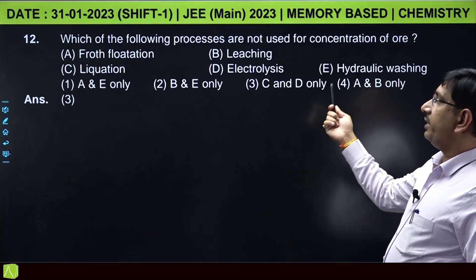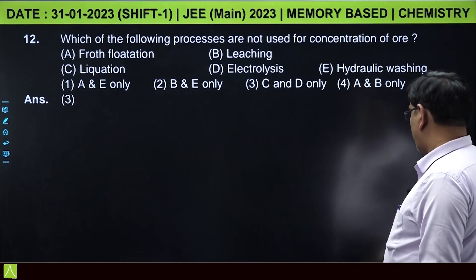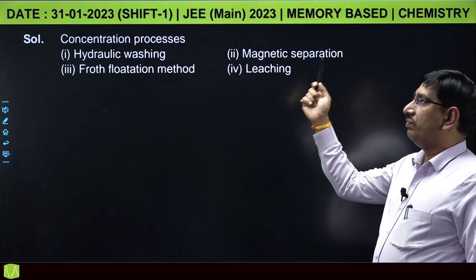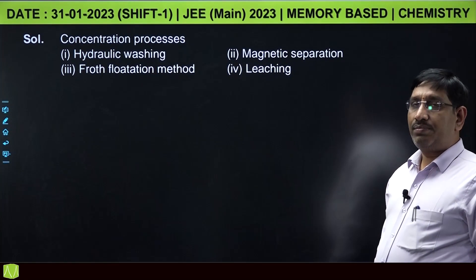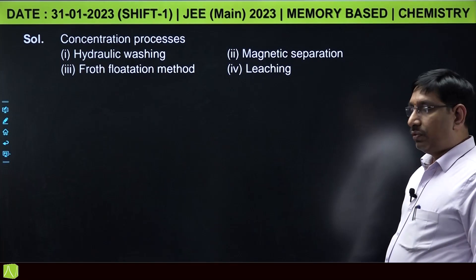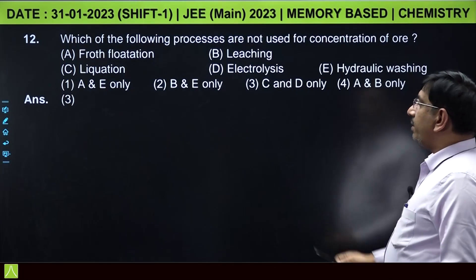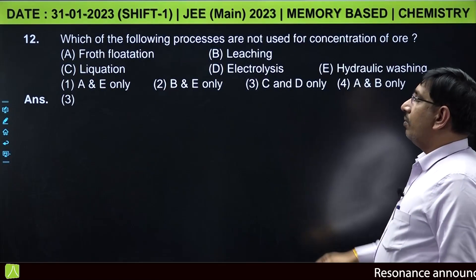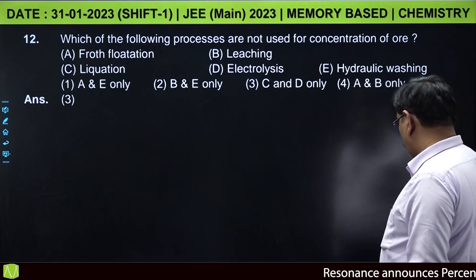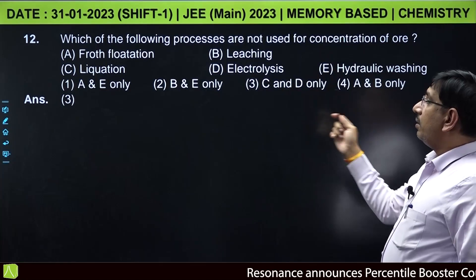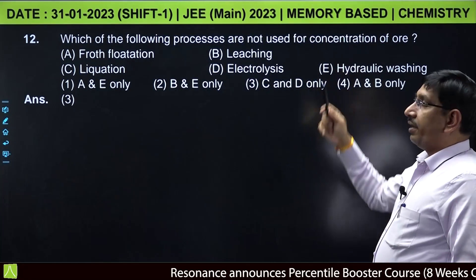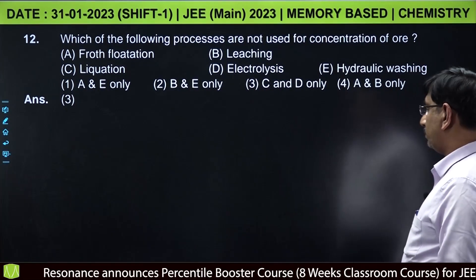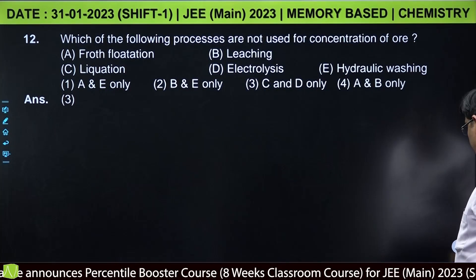Which of the following processes are not used for concentration of ore? Froth flotation, leaching, liquation, electrolysis, hydraulic washing. Among these, hydraulic washing, magnetic separation, froth flotation, and leaching, these are the methods used for concentration of the ore. Here liquation and electrolysis are refining methods, purification methods. These are not concentration methods. Except these two, remaining all are concentration processes. Answer: C and D only, not concentration methods.